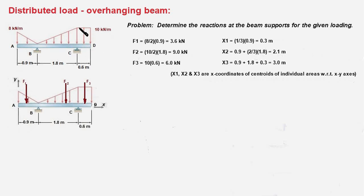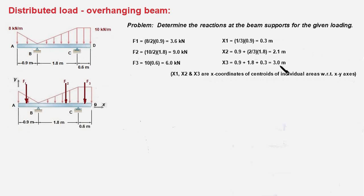The third area is a rectangle, and the area under the load curve is 10 times 0.6 meters, giving F3 = 6 kilonewtons. Its line of action is at the center of 0.6, so its distance from point A is 0.9 plus 1.8 plus 0.3, which works out to 3 meters. So now we have the magnitudes of the three individual forces and their points of application x1, x2, and x3.